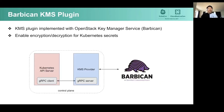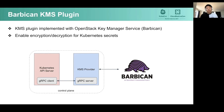The last component in my part is the Barbican KMS plugin. Barbican is a key manager service in OpenStack. The Barbican KMS plugin is a KMS provider running as a gRPC server on the Kubernetes control plane, talking to the Barbican service in the cloud to fetch the key encryption key. Using the key encryption key, Kubernetes can manage the data encryption key and the data stored in storage — mostly etcd. The Barbican KMS plugin is responsible for fetching secrets from Barbican to encrypt or decrypt data for Kubernetes secrets.